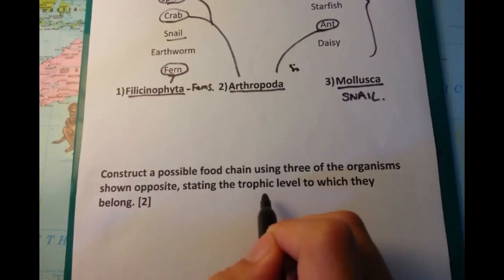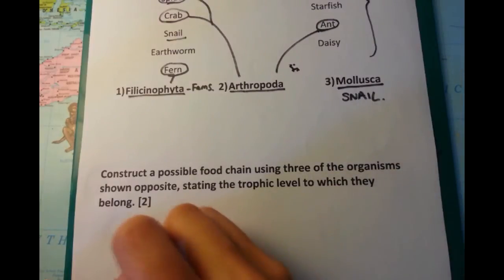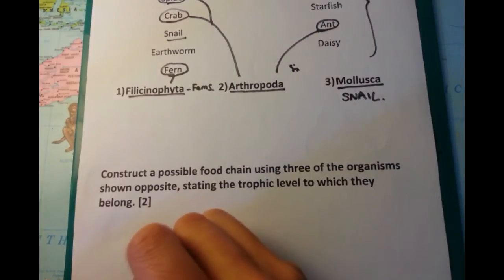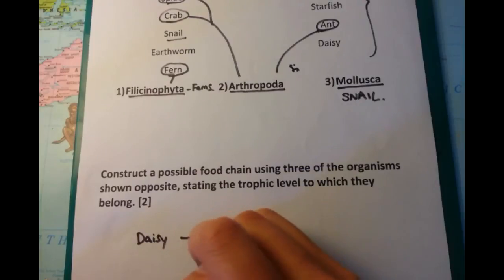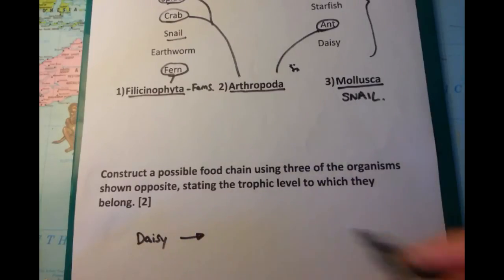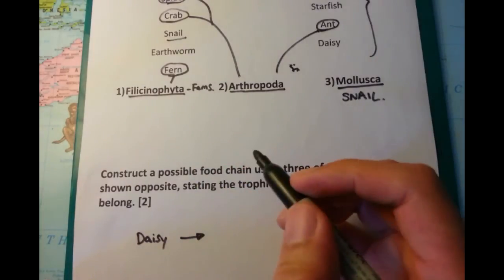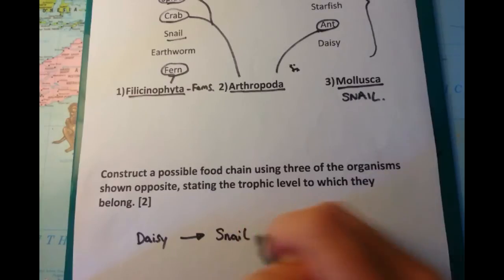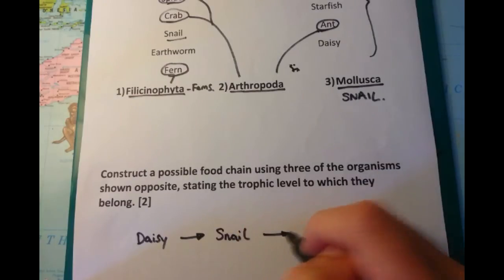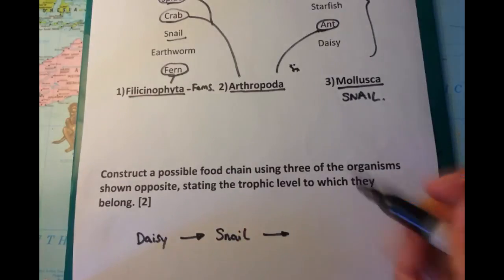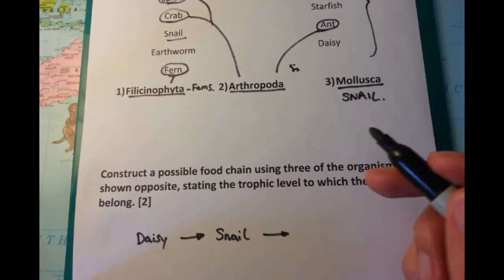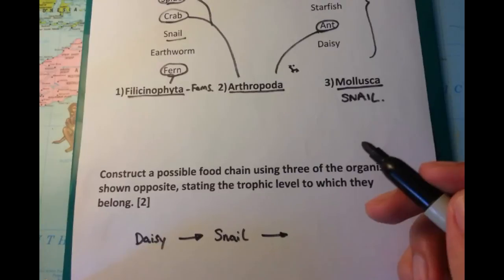The second part of this question is to construct a possible food chain using three of the organisms shown opposite, remembering that you need to state the trophic level to which they belong. So I'm going to start off by talking about this daisy, which is going to get eaten by a snail, and the snail is going to get preyed upon by a spider.